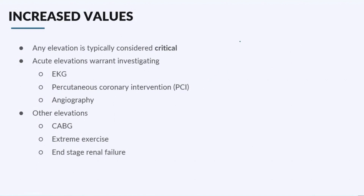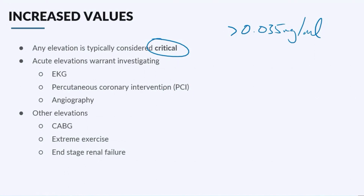So you get your labs back and you have an increased troponin greater than 0.35 nanograms per milliliter. Anytime you have an increased troponin, it's almost always considered a critical lab. That means there's some sort of heart injury that's occurred or is still occurring and you've got to figure out why. Usually the first thing you're going to do is get an EKG — look at your rate and rhythm. You may have to take them to the cath lab to do a percutaneous coronary intervention or PCI. Sometimes you'll do angiography to figure out if there's really a blockage, because that's what an MI is — a blockage of those coronary arteries.